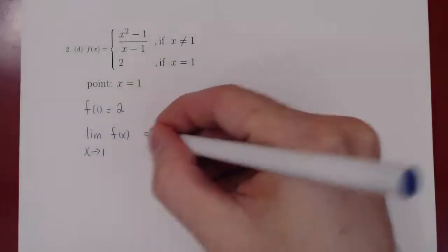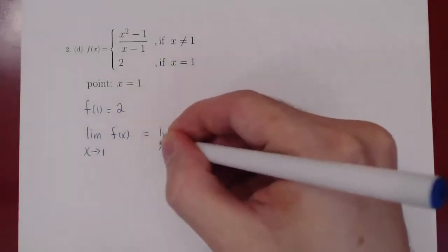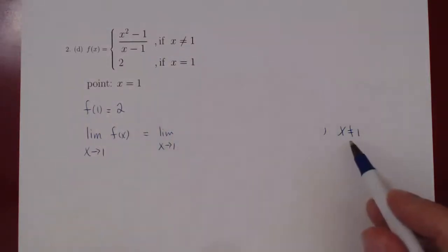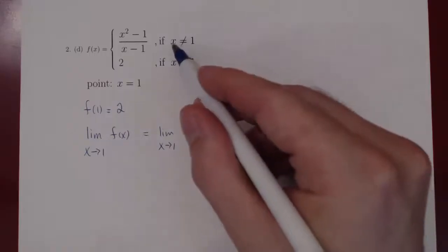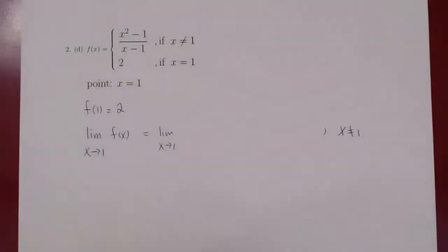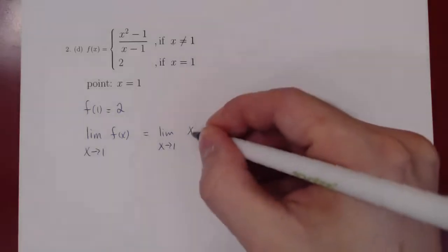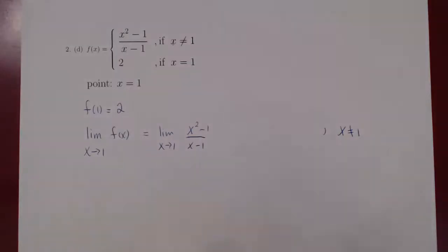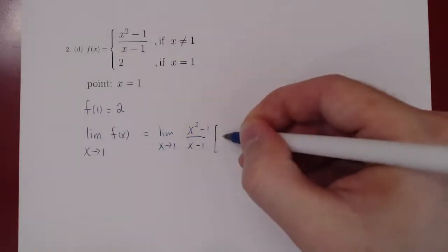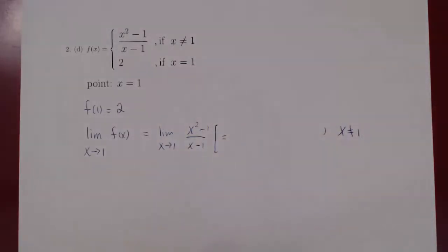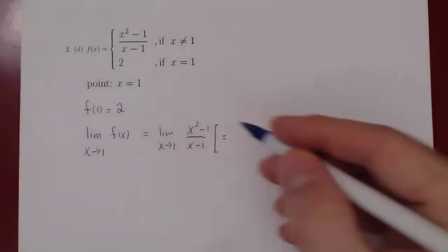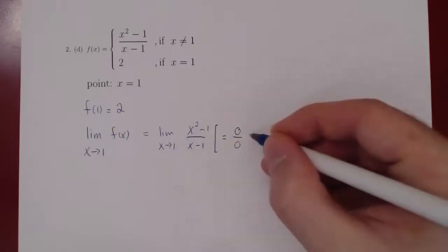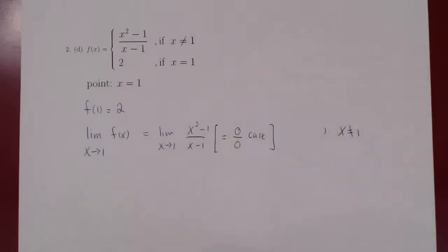So the question is: what is f(x) when x is close to 1 but not exactly 1? Well, when x is not exactly 1, f(x) is x squared minus 1 over x minus 1. When you have a limit, the first thing you consider is your case. As x approaches 1, x squared minus 1 approaches 0, and so does x minus 1. So we have a 0 over 0 case.